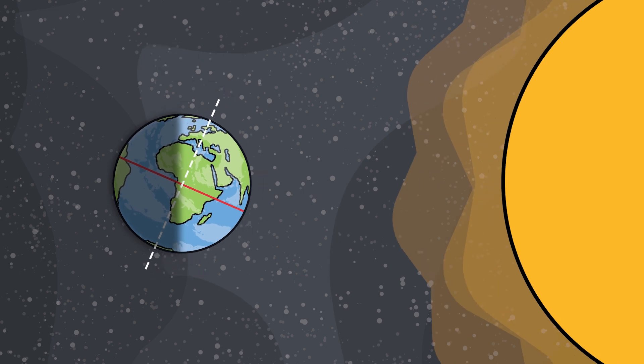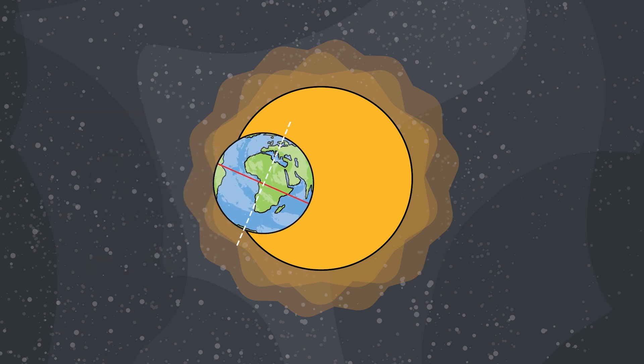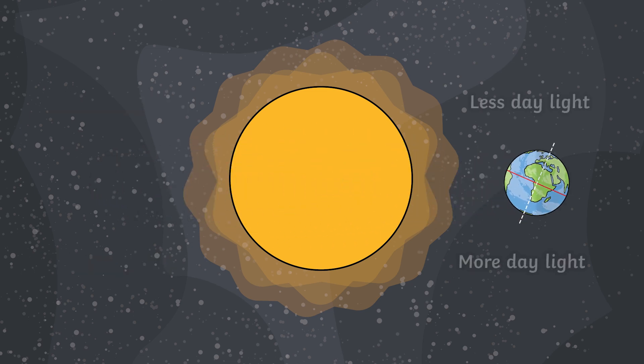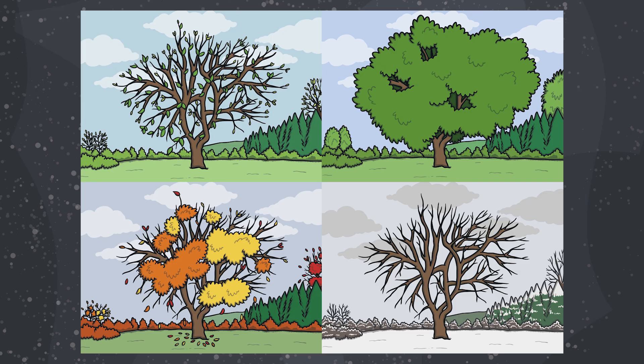This means that as the Earth orbits the sun, the amount of daytime and night time across different parts of the Earth changes every single day by a few minutes. This is also the reason why we have different seasons.